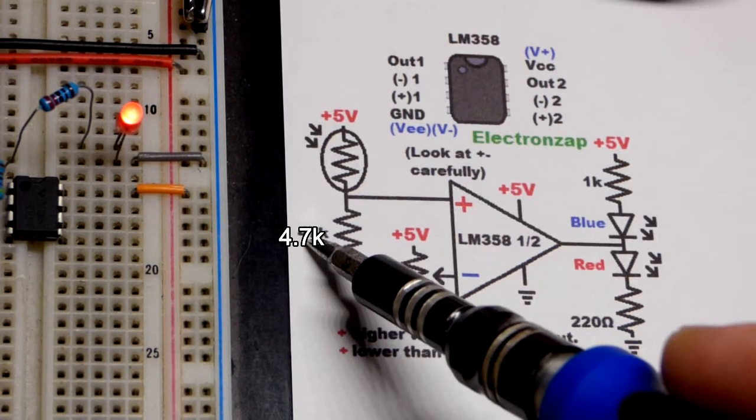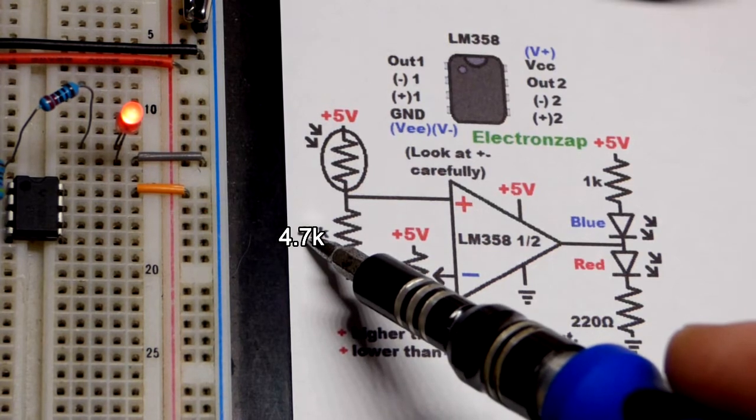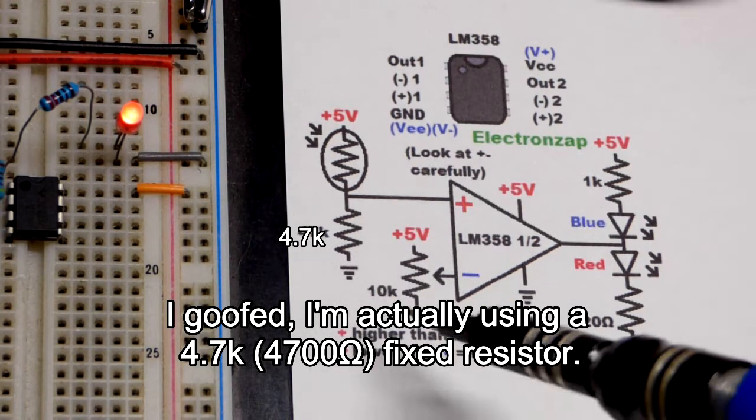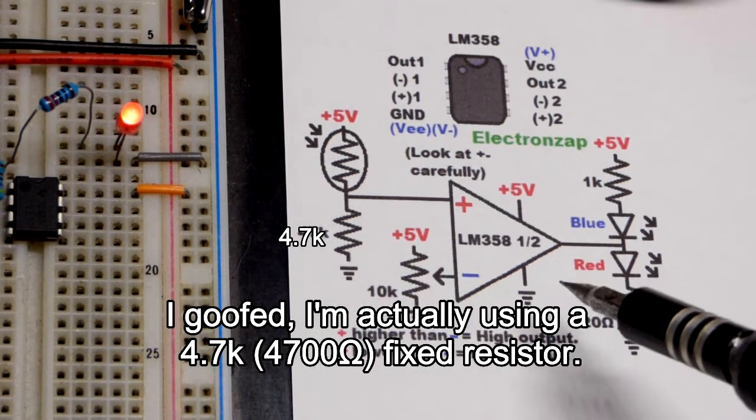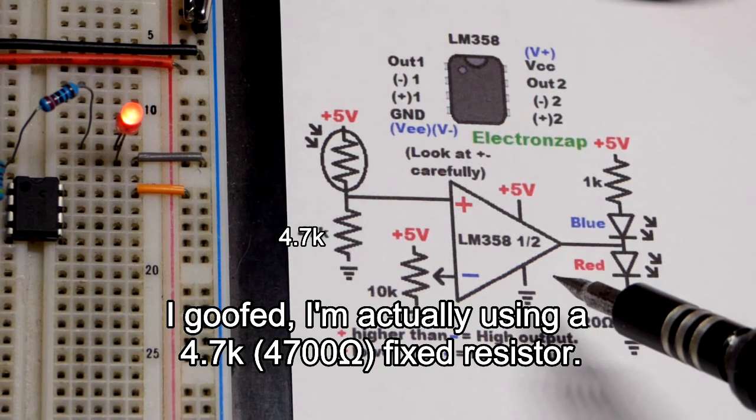I used a 10 kilo ohm resistor. Now I'm using 47 kilo ohms just because that's the value I grabbed. I thought that would work out pretty well with these light levels.